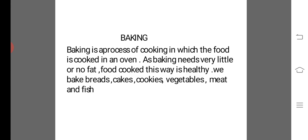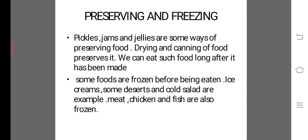Now, how can we preserve food for a long period of time? We can store or preserve food like sauces, jams, and pickles — these are preserved foods that can be used for a long time. Drying and canning of food preserves it. Drying means removing all water content from the food, because if there is water it will spoil.